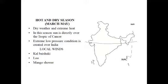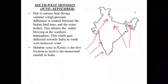On 21st June, the Sun starts its northward movement from the south towards the north. When it moves towards the north, it is directly over the Tropic of Cancer, creating extreme low pressure conditions over the Indian landmass.